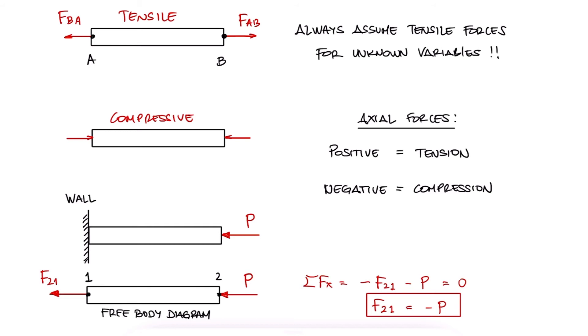The negative value would mean that the force is actually going in the opposite direction, therefore being compressive, as well as just telling us, without drawing anything else, that F21, or the reaction R, is a compressive force following the convention for negative values of axial loads being negative.